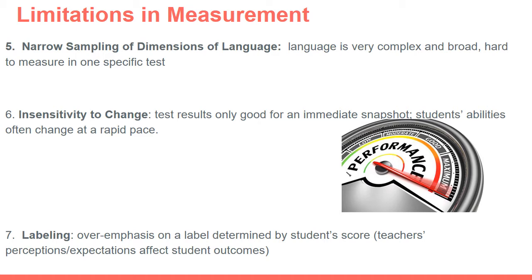A seventh limitation is labeling. Based on how students perform on tests, teachers can assume that is the student's permanent level. If a student receives an intermediate level on the TELPAS from last spring, the teacher the following year might still consider that student as intermediate, even though the student could have progressed. The student's abilities might actually fall between two positions — between intermediate and advanced. That label falsely misrepresents the student's true abilities.